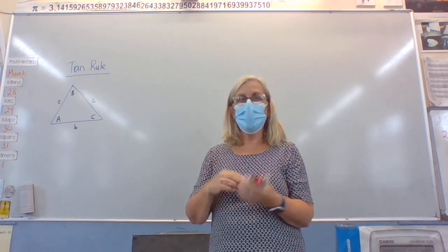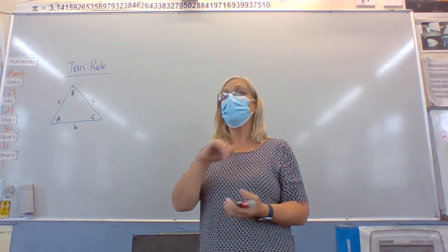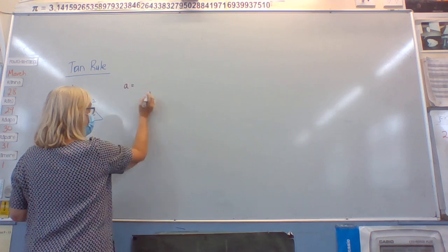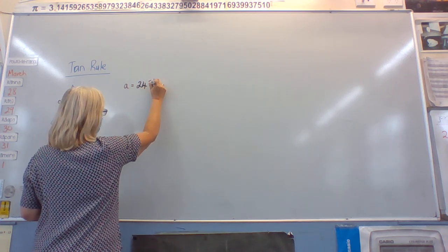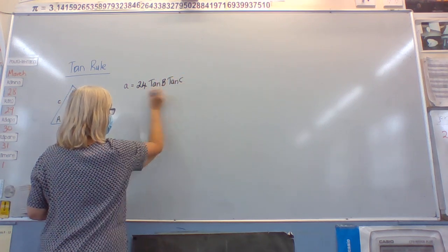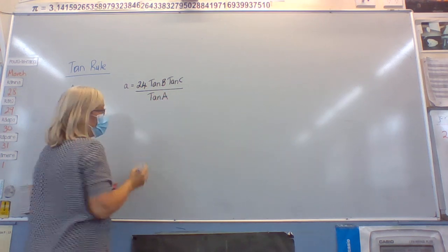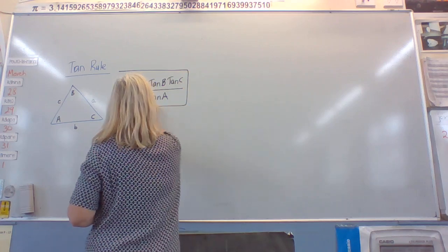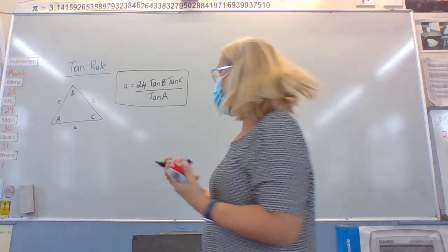If you're looking at the tan rule, it's special because we're finding a side given the angles. What it's saying here is that once we're given all three angles, we can find the side.